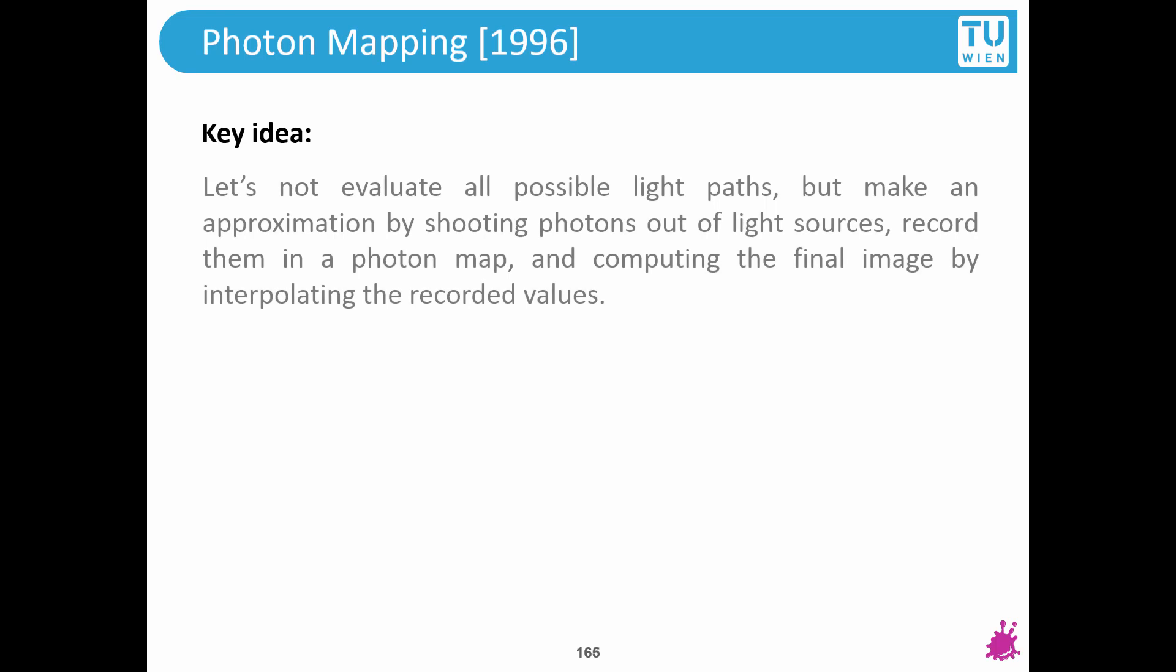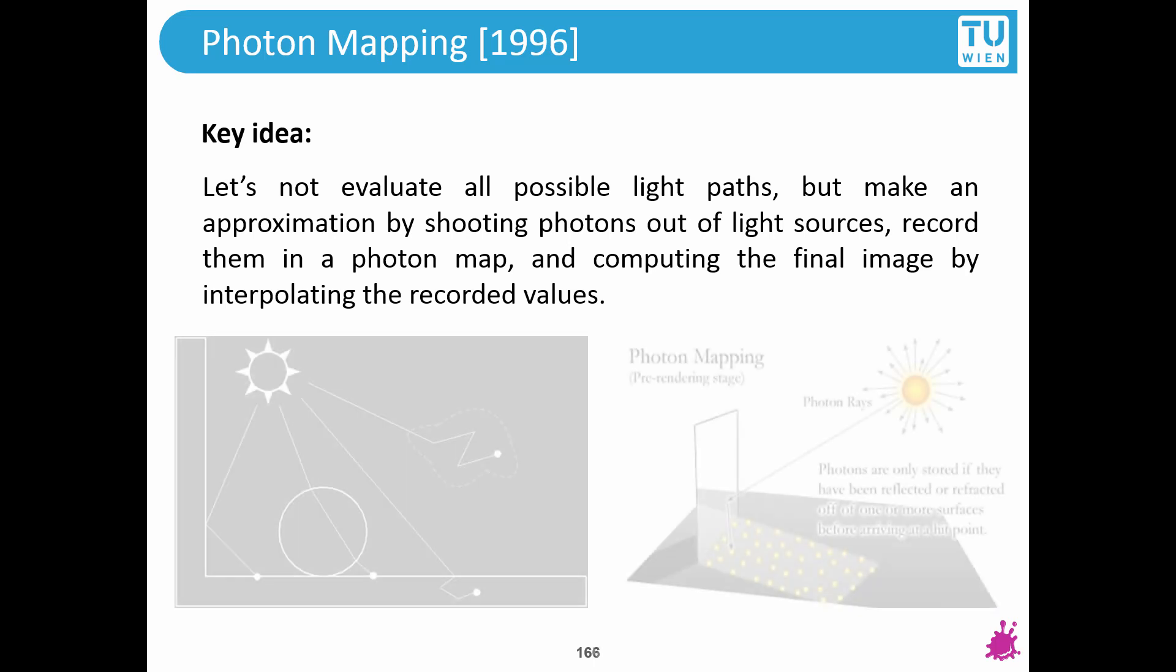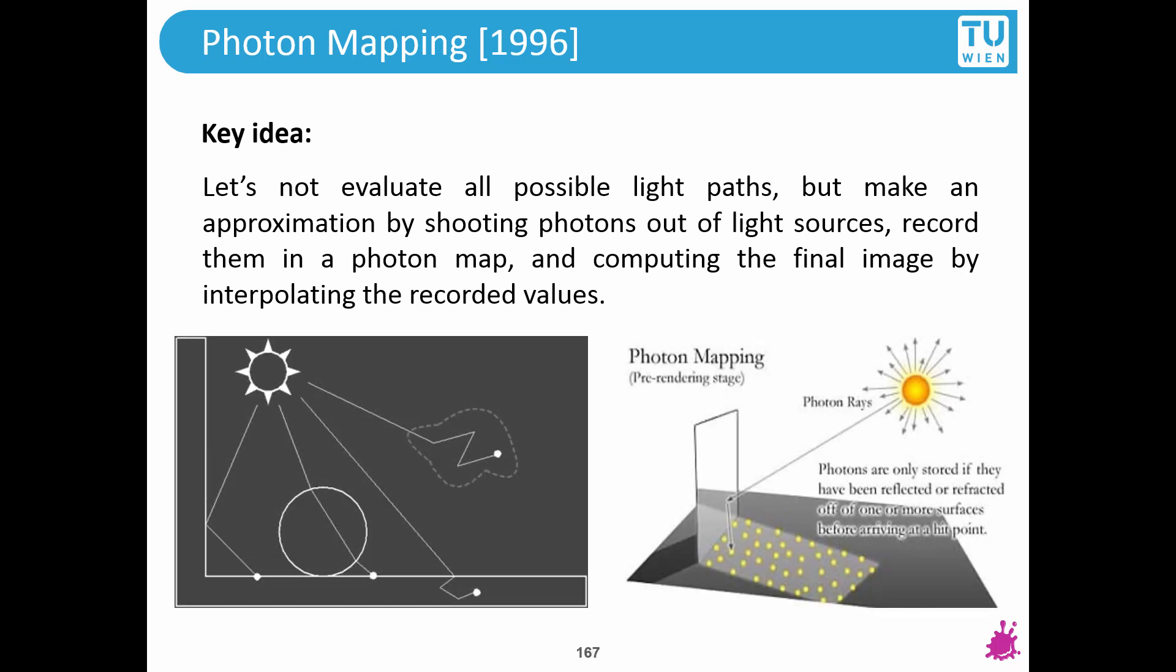Photon mapping. The key idea is that we don't want to evaluate all possible light paths. What we would like to do is sending photons out of light sources, and we are going to store all of these photons in the map, and when we are computing actual light paths, we are going to rely on interpolation. We are going to use this knowledge that we have in the photon map.